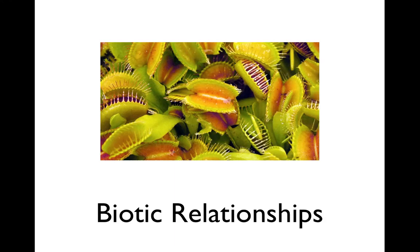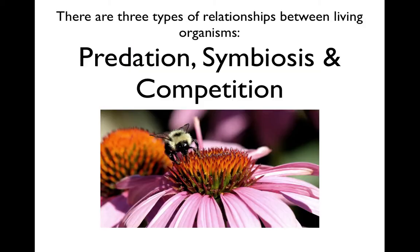Here we go with our lesson on biotic relationships. We remember the term biotic factors in an ecosystem — those are all the living things in an ecosystem. So these are the relationships between living things in ecosystems. There are three types of relationships between organisms: predation, symbiosis, and competition. Within these three types of relationships, sometimes there are subcategories. We're going to go through these relationships right now.